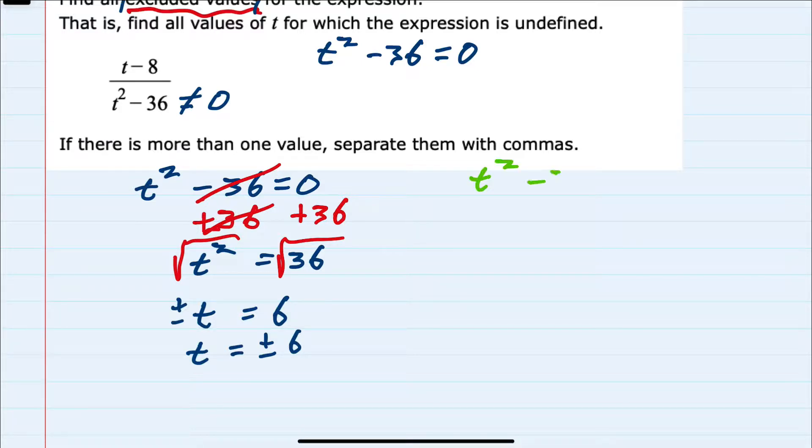And another approach to solving t squared minus 36 equals 0 would be to factor the left hand side, and t squared minus 36 would factor into t minus 6, t plus 6 equals 0.